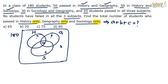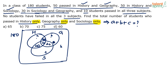50 passed in History and Geography — that whole leaf equals 50. Since 10 are already in G, the remaining 40 go in the History-Geography-only region D. So D = 40, and 40 + 10 = 50. Similarly, 50 passed in History and Sociology — that leaf is 50, 10 are already in G, so the History-Sociology-only region E = 40. For Sociology and Geography, the total is 30; 10 plus this region should equal 30, so the Sociology-Geography-only region F = 20.